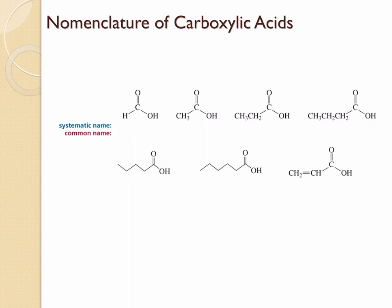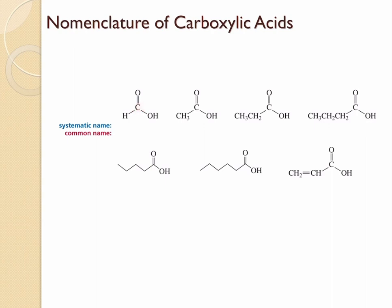For the IUPAC name, carboxylic acids need to end with 'oic acid'. So if there is going to be one carbon, then it has to be derived from methane. Here is the carboxyl group, and therefore this should be methane plus oic acid — therefore it should be methanoic acid.